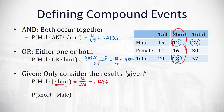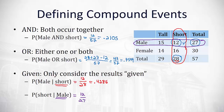Switching the order changes the result. For the probability of short given male, we now only look at the males, shrinking our sample size to 27. There are still 12 short people, but we divide by 27, giving 12 out of 27, or 0.4444. It's important to note these probabilities are different from each other depending on what's given.